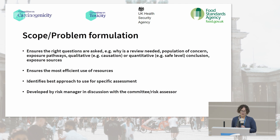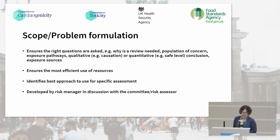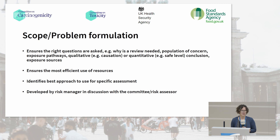The working group considered scope and problem formulation as the first and most important step. A clearly defined scope ensures the right questions are asked: why is an assessment needed, what are the populations of concern, what are the exposure pathways and sources, and whether a qualitative or quantitative conclusion is required. This ensures resources are most efficiently used and the right scientific approaches are applied. In the UK, scope and problem formulation is usually developed by risk managers, ideally in conjunction with risk assessors and committees, ensuring the output is useful for regulatory decisions.